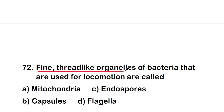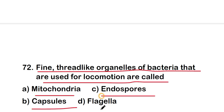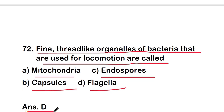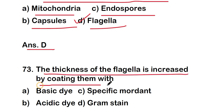Next question: fine thread-like organelles of bacteria that are used for locomotion are called — mitochondria, capsule, endospore, or flagella? The answer is option D — flagella. Fine thread-like organelles of bacteria used for locomotion are flagella.